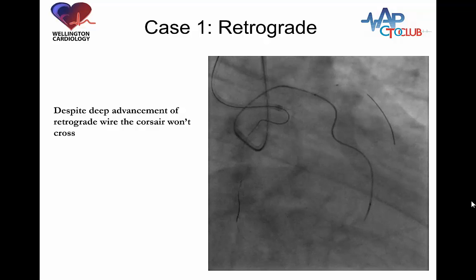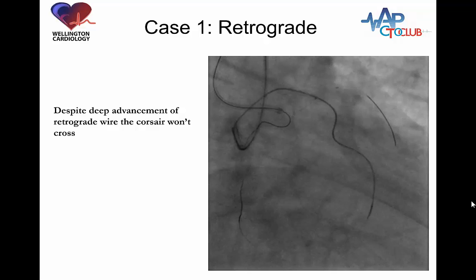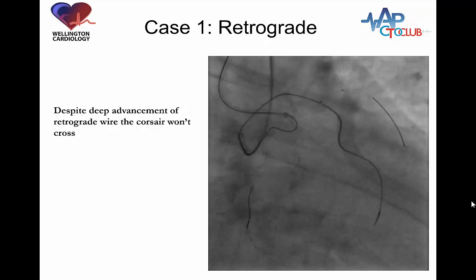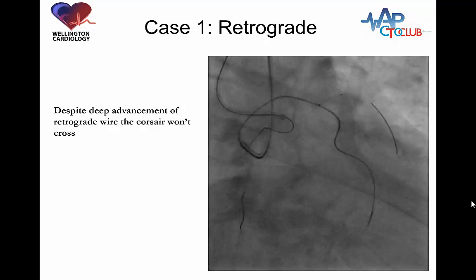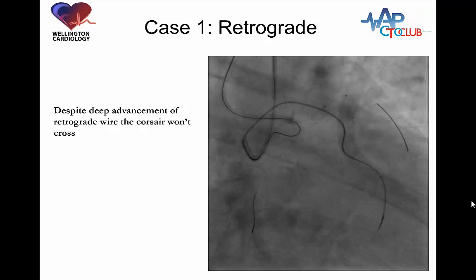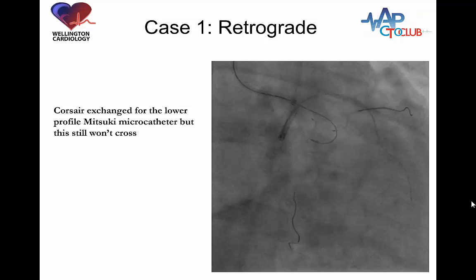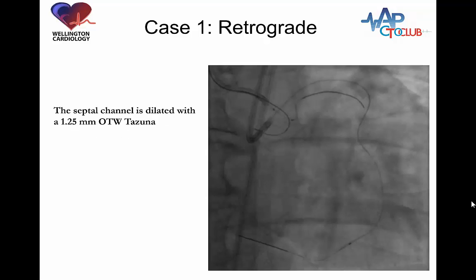The solution to this problem is usually to downsize to a smaller microcatheter. My favorite is the Turnpike LP or Corsair. Unfortunately, in the lab we were working in, neither of these microcatheters were available. We used a Mitsuki microcatheter, which is a low-profile microcatheter made by Kaneka, but again this would not advance past the same point.